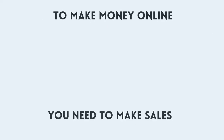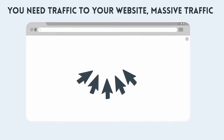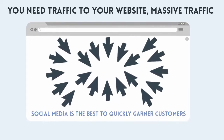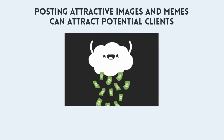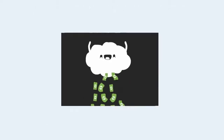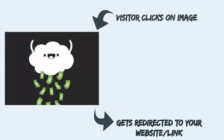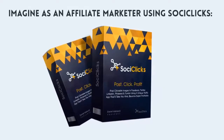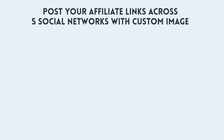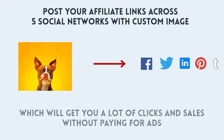To make money online you need to make sales, but to achieve this you need massive traffic to your website. Social media is the best way to quickly garner customers. Posting attractive images and memes can attract potential clients, and when your images are clickable, visitors will be redirected to your website or choice of destination — that's traffic with no extra cost. As an affiliate marketer using SociClicks, all you need to do is post your affiliate links across five social networks with a custom image, which will get you a lot of clicks and sales without paying for ads.